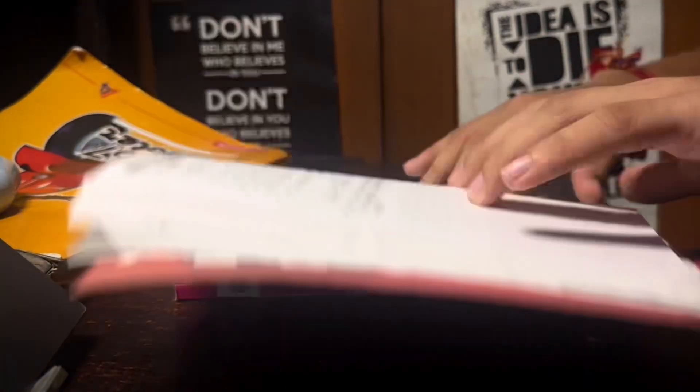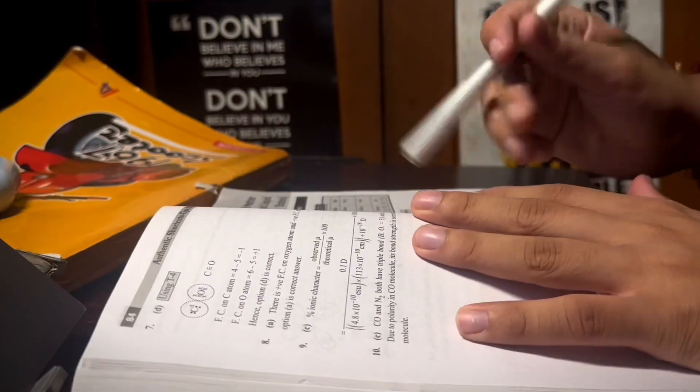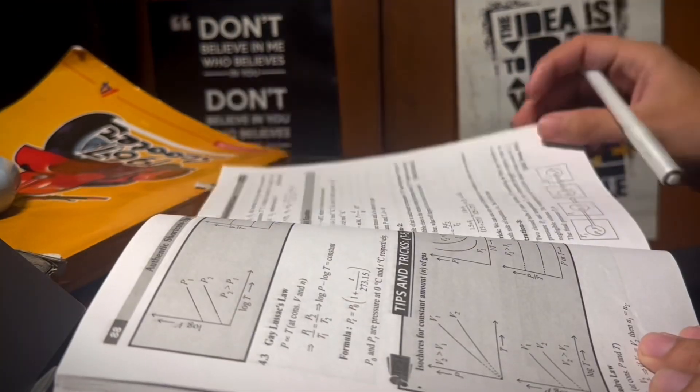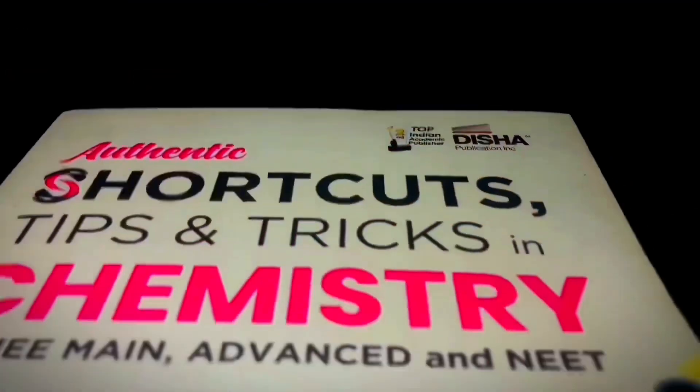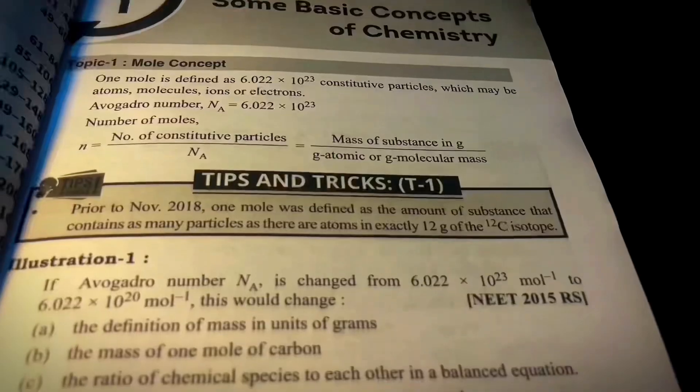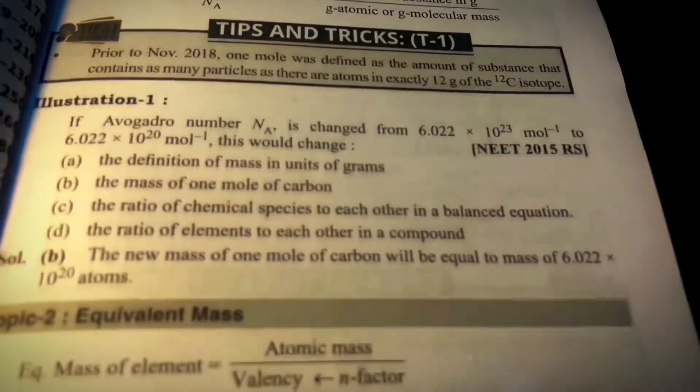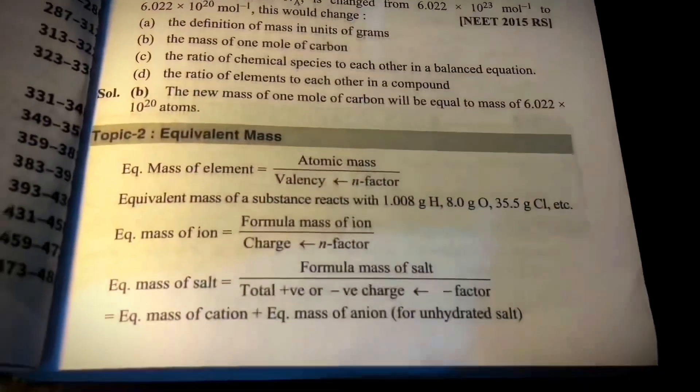Actually, the book I'm using is from Disha publication whose name is Shortcut Tips and Tricks for JEE Mains and Advanced. This book contains a lot of approaches for fast question solving. This book has 250+ shortcut tips and tricks to solve JEE problems, and it has 500+ shortcut solutions of JEE questions which is very useful for deep understanding.